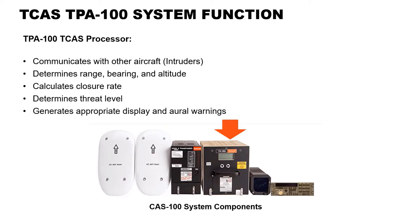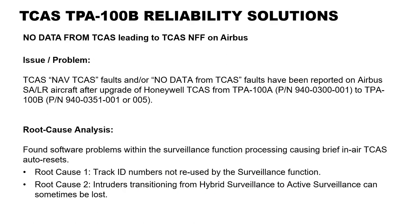Below are the TCAS 100 system components. Regarding the no data from TCAS issue, TCAS testing returned as no fault found on the Airbus fleet. The issue reported is TCAS NAV TCAS fault and/or no data from TCAS fault, reported on Airbus single-aisle long-range aircraft after upgrade of Honeywell TCAS from TP-100A part number 940-0300-001 to TP-100B part number 940-0351-001 or -005. The removed units were tested at Honeywell RNO as no fault found.